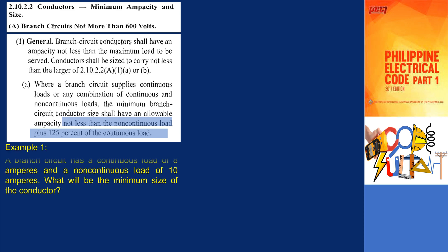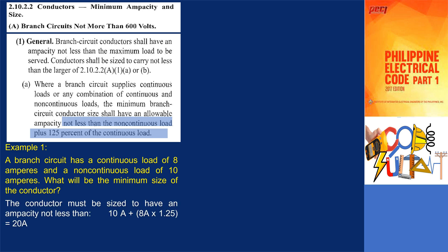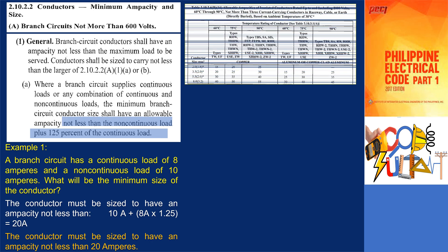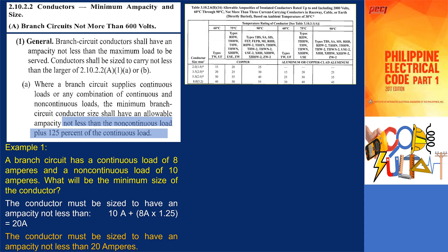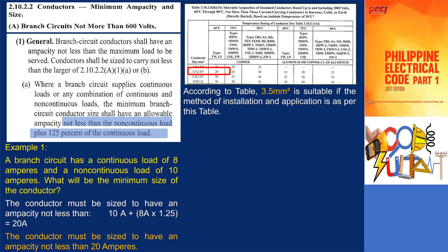For example, a branch circuit has a continuous load of 8 amperes and a non-continuous load of 10 amperes. What will be the minimum size of the conductor? The branch circuit conductor must be sized to have an ampacity not less than 10 amperes plus 8 amperes multiplied by 1.25. Therefore, the conductor must be sized to have an ampacity of not less than 20 amperes.